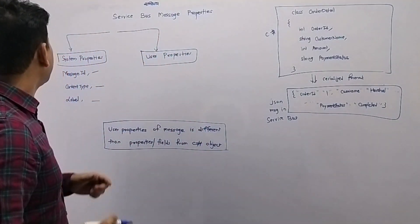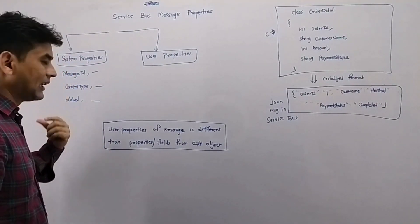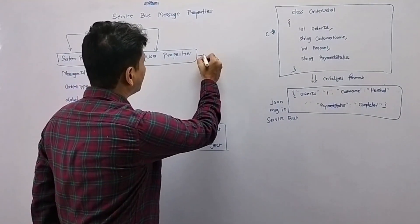The message property can be system properties - an example is message ID, content type, label - or it can be user properties, which we also call custom properties.